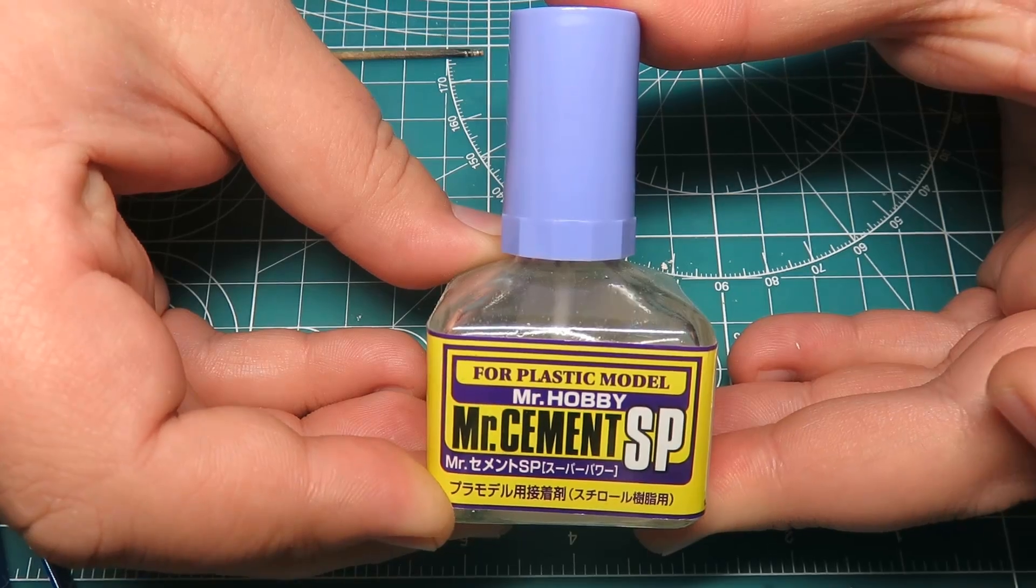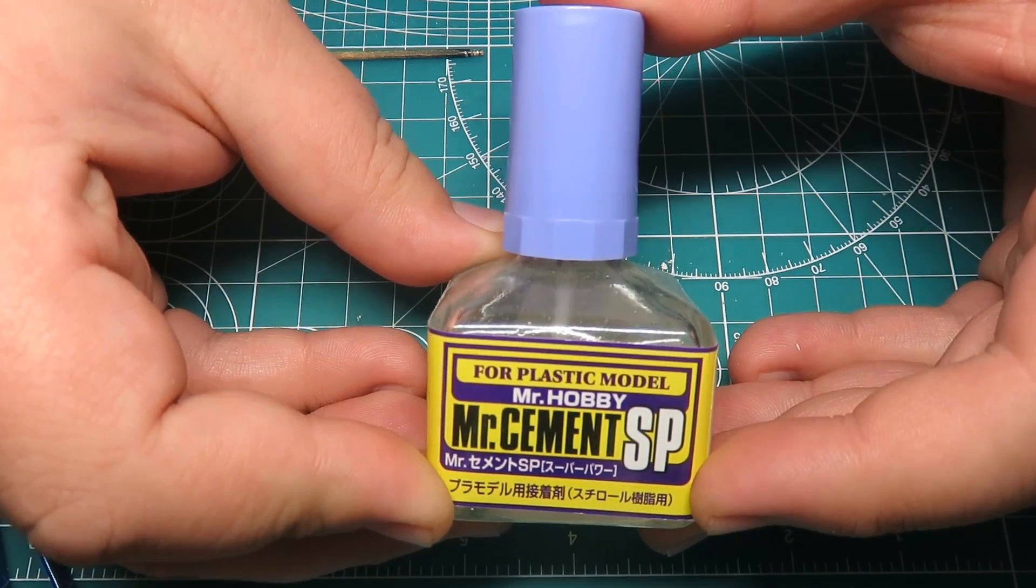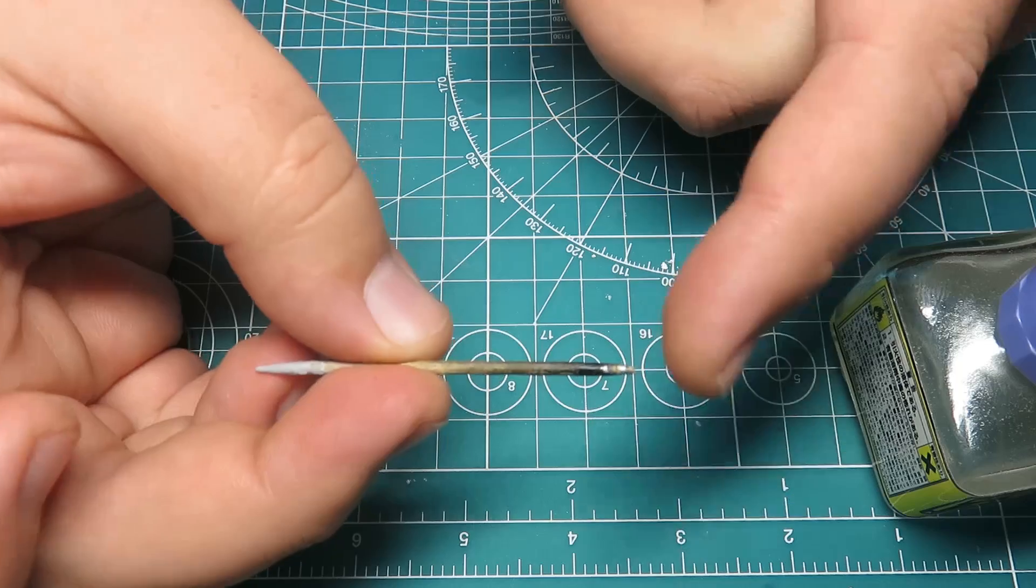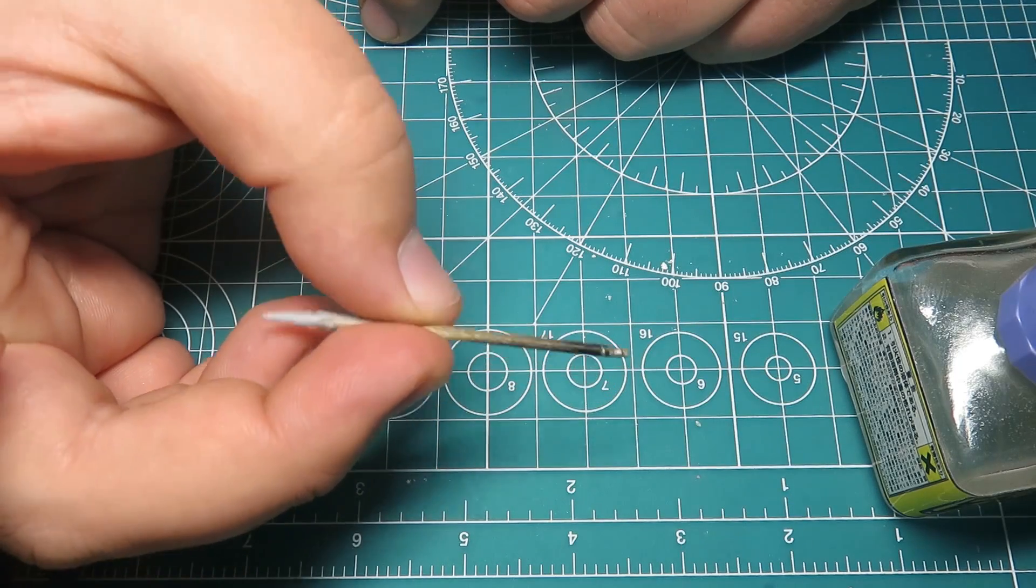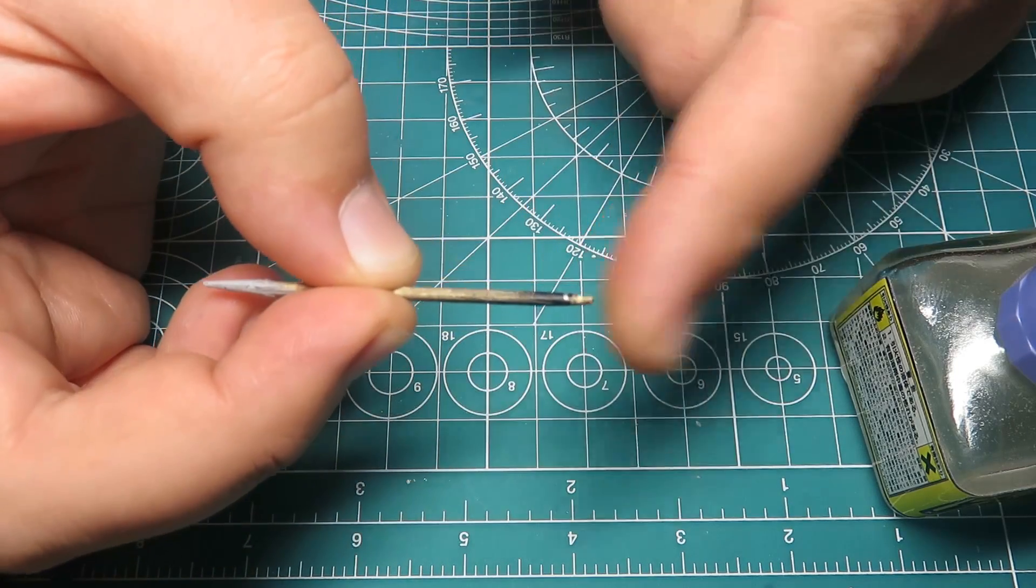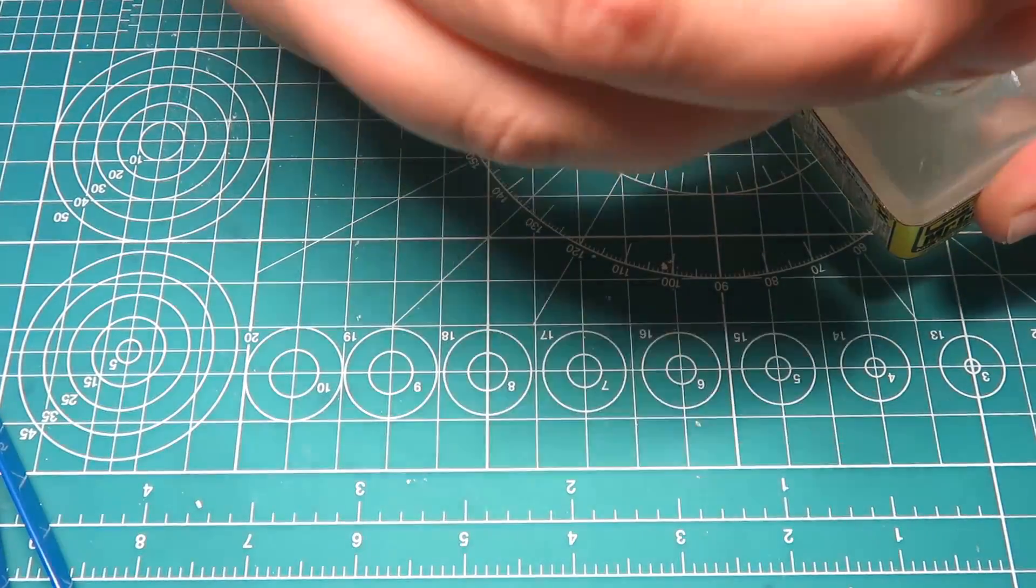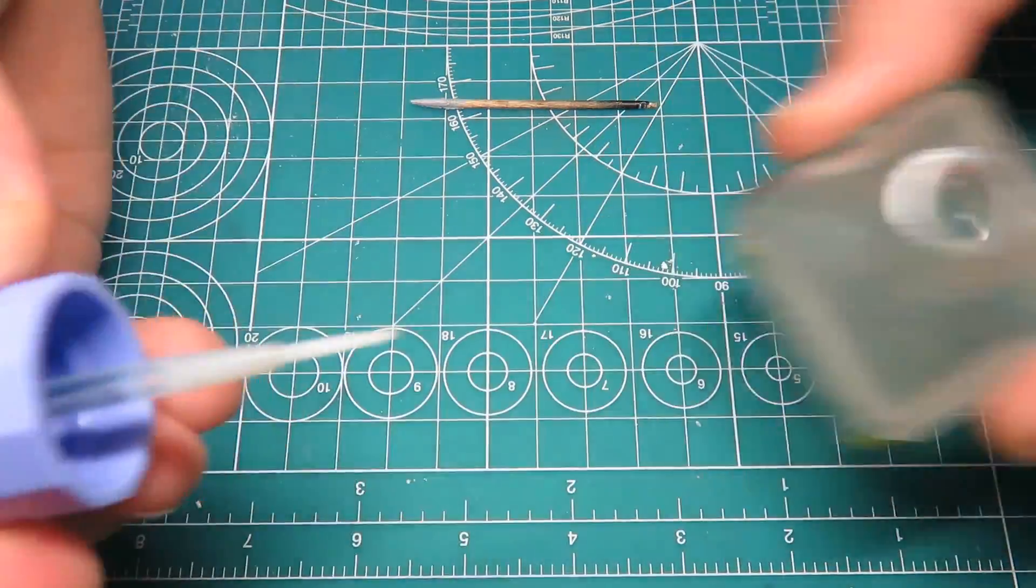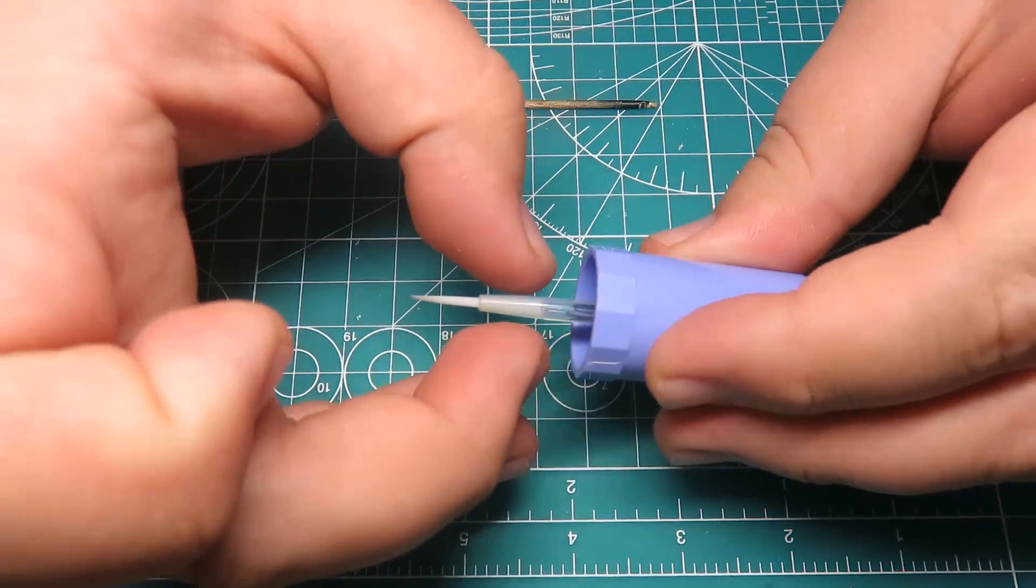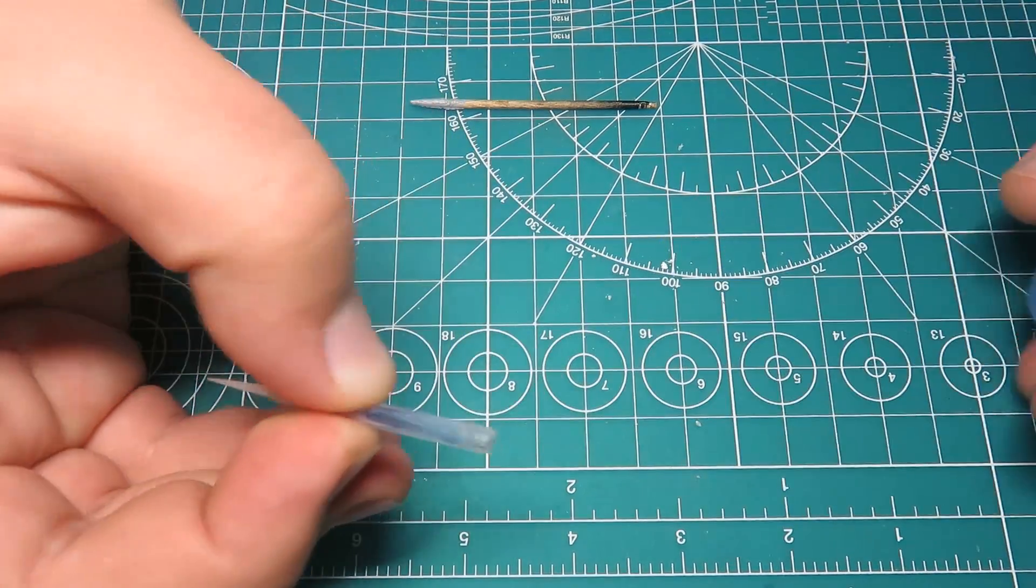Now, the Mr. Hobby one is going to be a little trickier, just a little bit. All you're going to need is a cocktail stick, something like this with a blunt end here. And I'm going to take off the cap and we're going to remove the shaft completely.